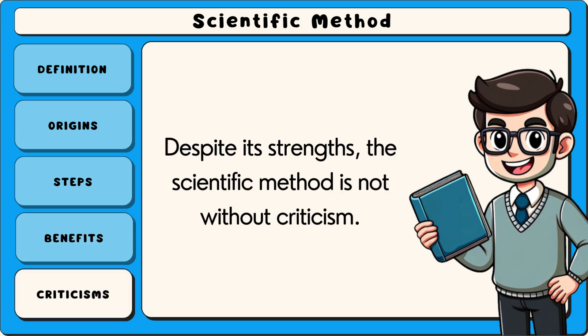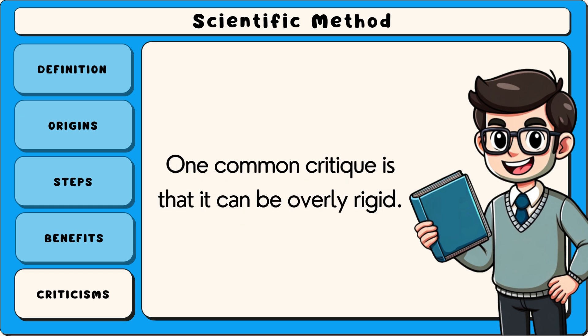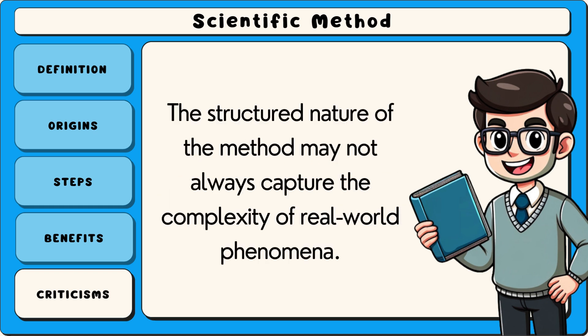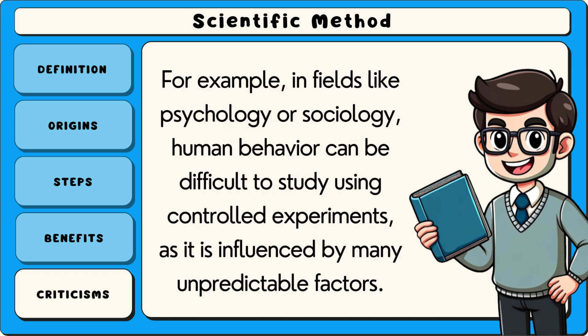Despite its strengths, the scientific method is not without criticism. One common critique is that it can be overly rigid. The structured nature of the method may not always capture the complexity of real-world phenomena. For example, in fields like psychology or sociology, human behaviour can be difficult to study using controlled experiments, as it is influenced by many unpredictable factors.